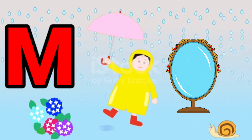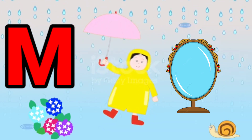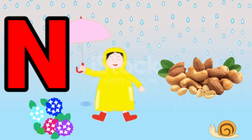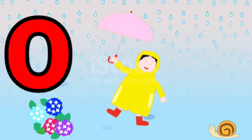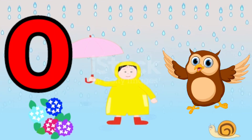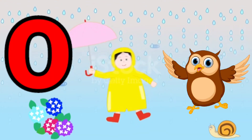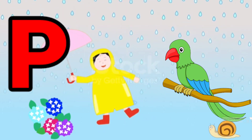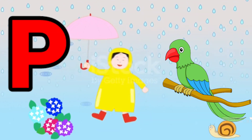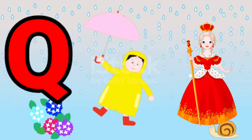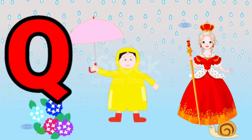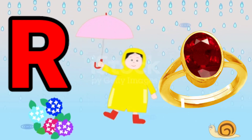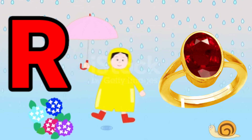M for mirror. N for manner. N for nerd. O for owl. P for parrot. Q for queen. R for ring.